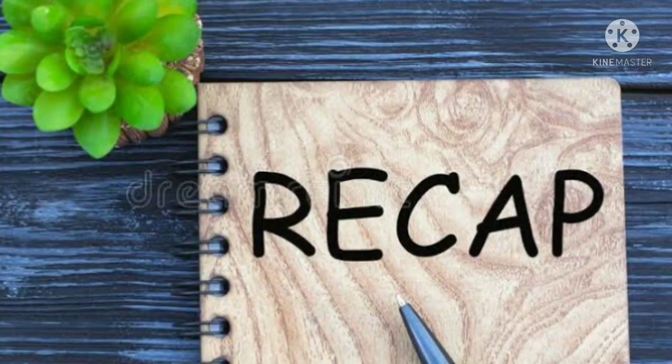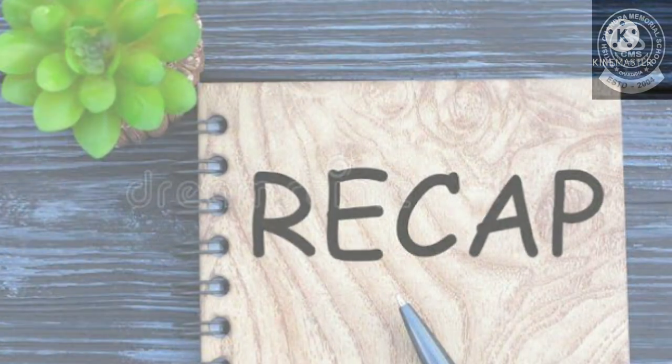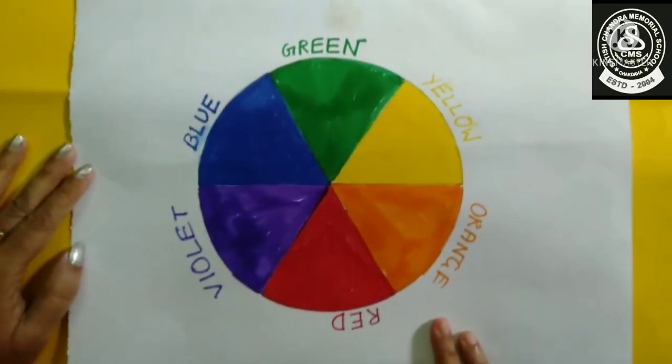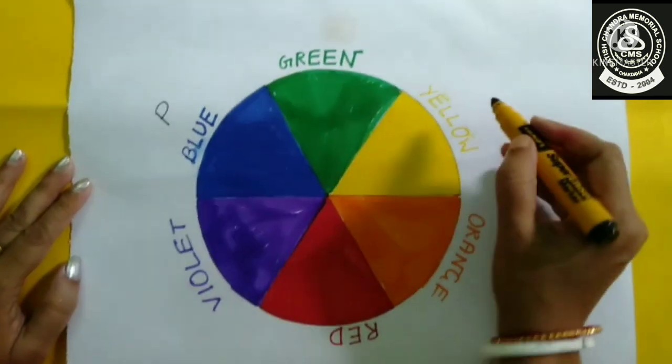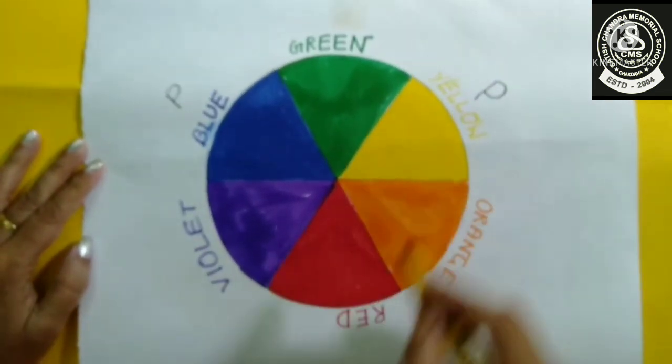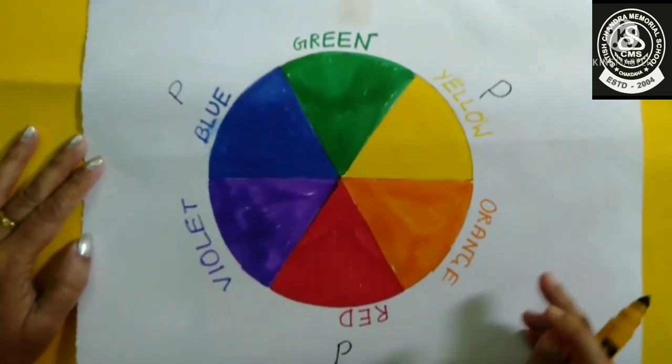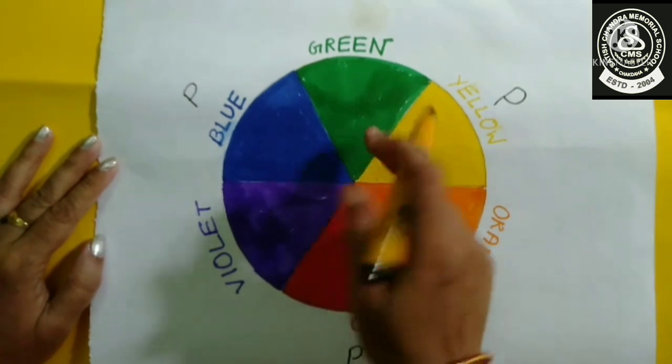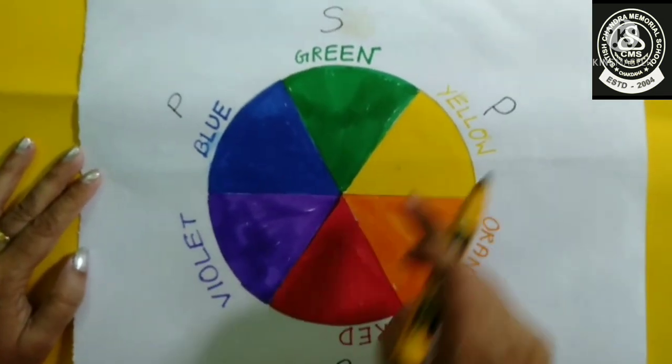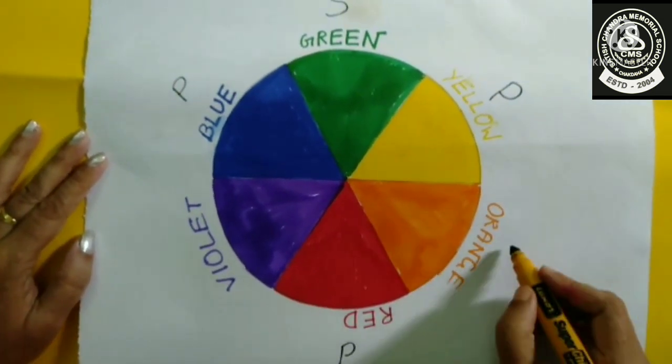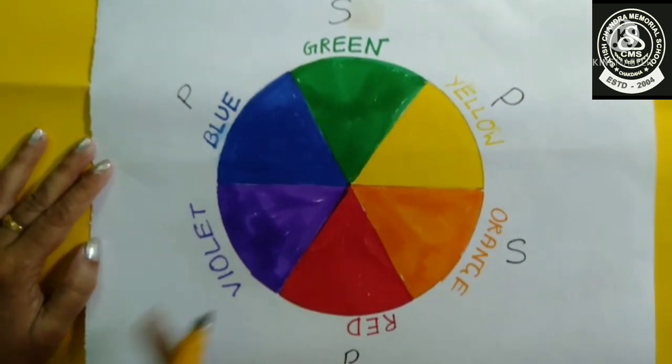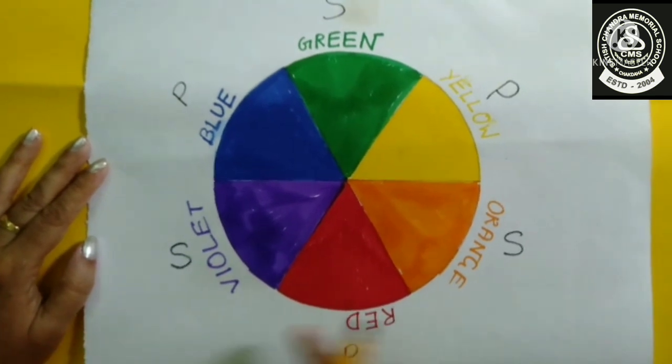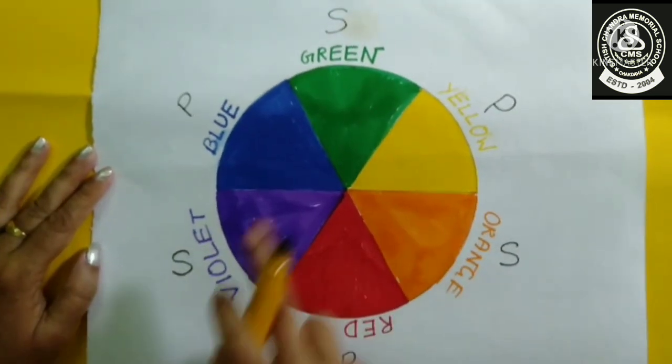And now it is time for a quick recap. Look at the color chart. We can see three primary colors here: blue, yellow, and red. After mixing blue and yellow we got green. By mixing red and yellow we got orange, and by mixing blue and red we got violet. Green, orange, and violet are secondary colors.